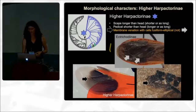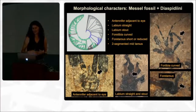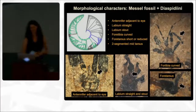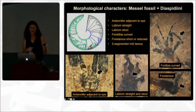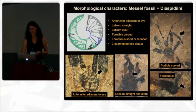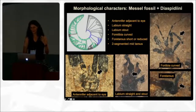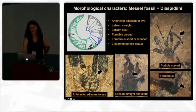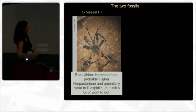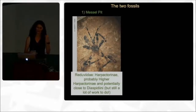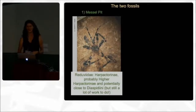The close relationship with DSBDines is supported by the antennifer being adjacent to the eye, a labium that is both straight and stout, a fore-tibia that's slightly curved also found in DSBDines, and a fore-tibia that's very short or reduced — unusual for higher Halpacturines — as well as a two-segmented mid-tibia, also really unusual. In summary, we are a little more confident this fossil is a Halpacturine, probably a higher Halpacturine, and potentially close to DSBDines, but there's still a lot of work to do to be certain.